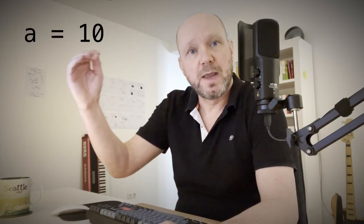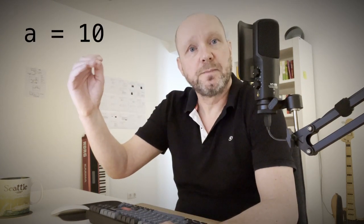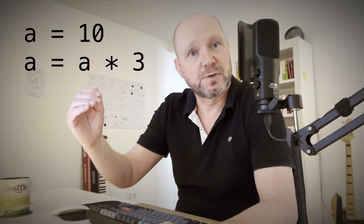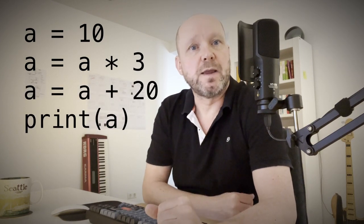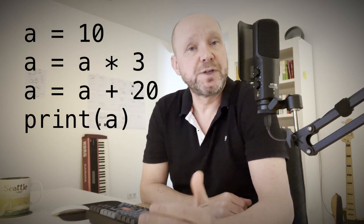Imperative programming is a style of programming where algorithms are written step by step. Let's say I want to add and multiply a couple of numbers. I could write a equals 10, a equals a times 3, a equals a plus 20, and then print a. Each line explicitly changes the state of variable a to finally reach the result of 50. That is an example of imperative programming.